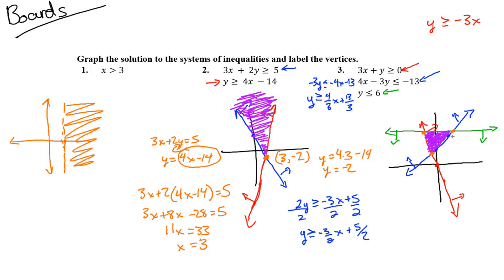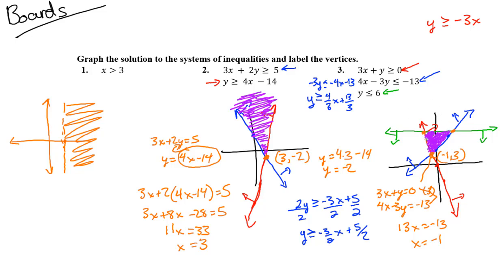To find the first vertex, intersect the red line 3x + y = 0 and the blue line 4x - 3y = -13. Multiply the red equation by 3 and add: 9x + 4x = 13x, and the y terms cancel, giving 13x = -13, so x = -1. Substituting into the red line: -3(-1) = 3, so y = 3. That vertex is (-1, 3).